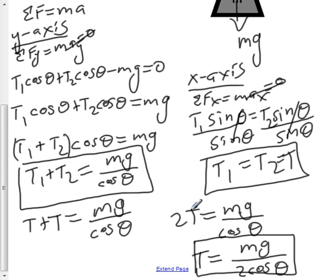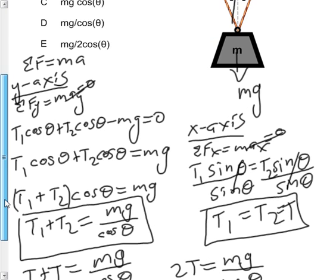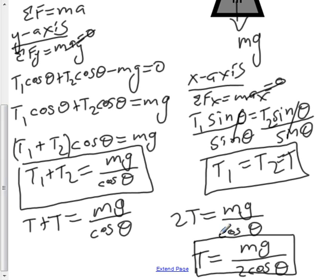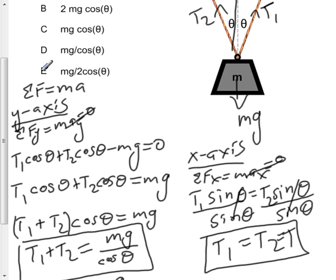That's the tension in only one string. The question was asking for the tension in each string. We have proven that the tension in one string is mg over 2 cos θ, which corresponds to answer E: mg over 2 cos θ.